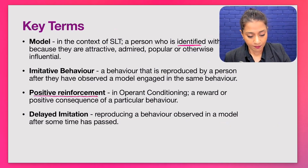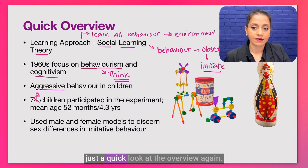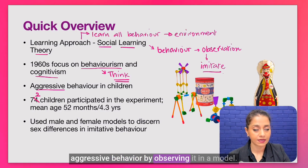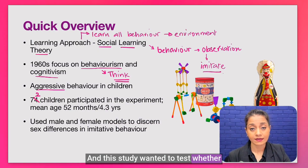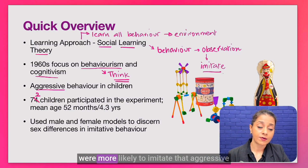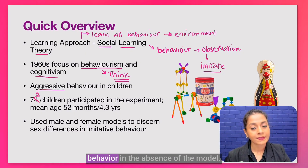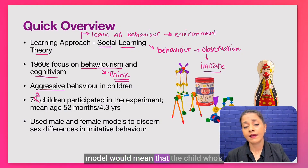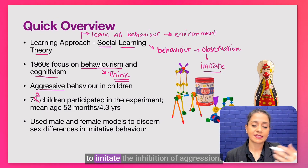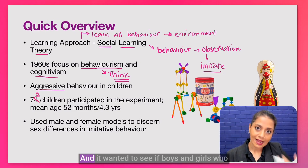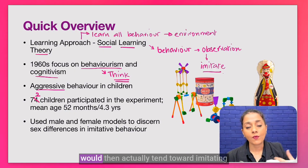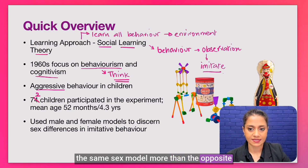Before we move on to the background, a quick overview recap: this study is focused on how children can learn aggressive behavior by observing it in a model. It wanted to test whether children who observed an aggressive model were more likely to imitate that aggressive behavior in the absence of the model, and whether observing a non-aggressive model would lead children to imitate the inhibition of aggression. It also examined whether boys and girls in the 72-child sample tended to imitate the same-sex model more than the opposite-sex model.